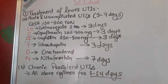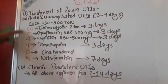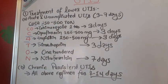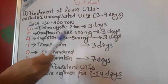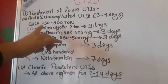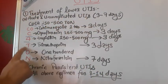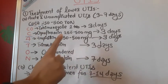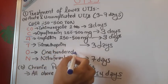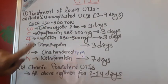Continuing the mnemonic: TON — T stands for trimethoprim 100 mg, and N stands for nitrofurantoin 100 mg. Important point: except for nitrofurantoin, all other drugs are given for just three days. Trimethoprim is given for three days, and nitrofurantoin is given for seven days. So cotrimoxazole two tablets, ciprofloxacin 250–500 mg, ampicillin 250–500 mg — all for three days; trimethoprim and nitrofurantoin at 100 mg each.